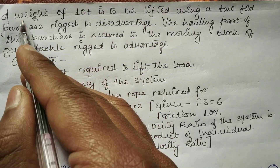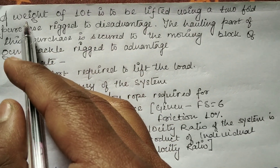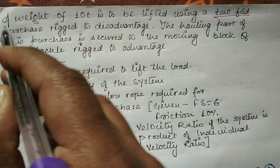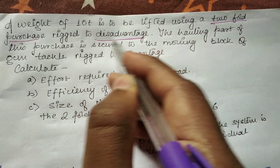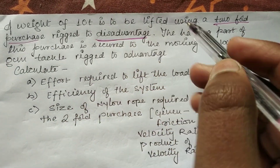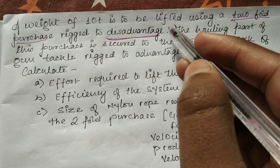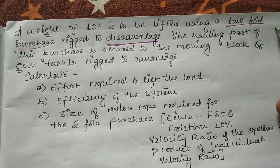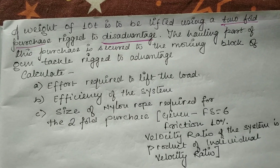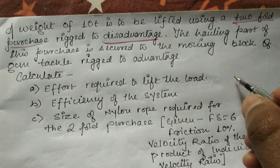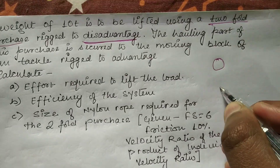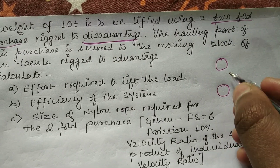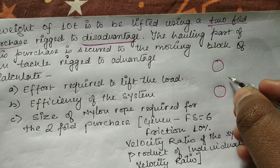In this question, a weight of 10 tons is to be lifted using a two-fold purchase rigged to disadvantage. A two-fold purchase rigged to disadvantage means the load and the effort will be in opposite directions.